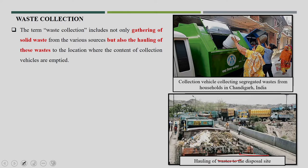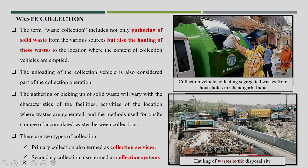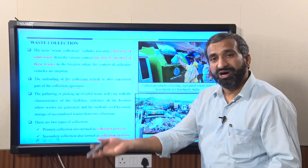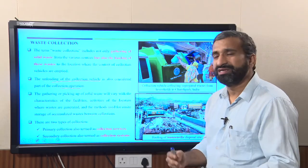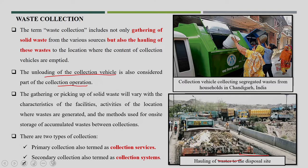From the treatment sites or transfer station, it will finally go to the disposal site. The unloading of the collection vehicle is also considered a collection operation — it is not only the collection from the source but also the transport from one location to another, including the unloading. The picking or collection of waste also depends on different kinds of activities at the location, how much waste is generated, and what kind of method we are using. Primary collection is also termed as collection services, which we are going to discuss today.